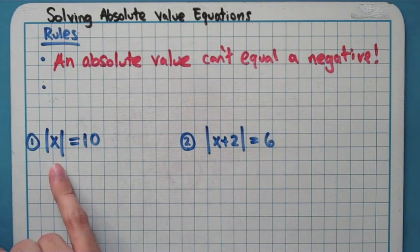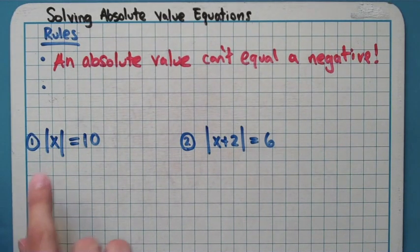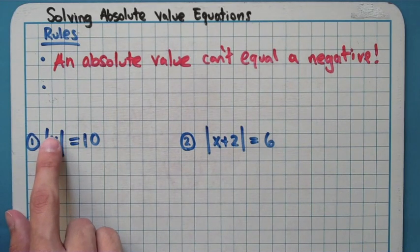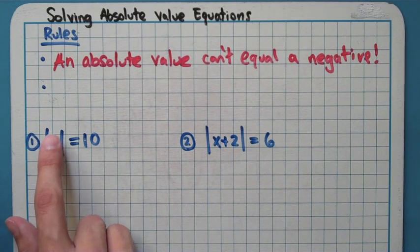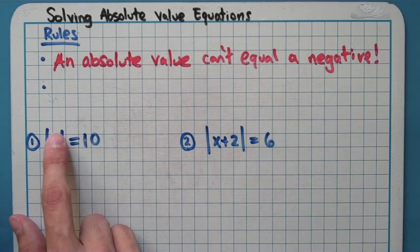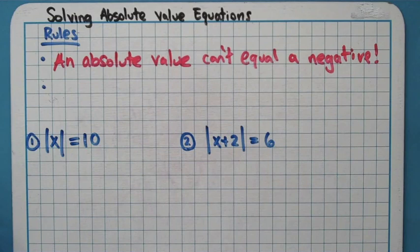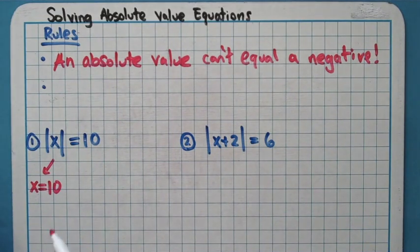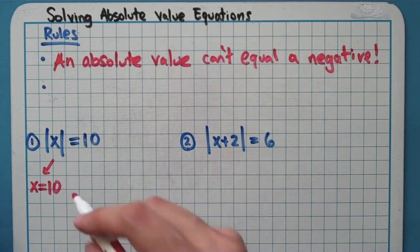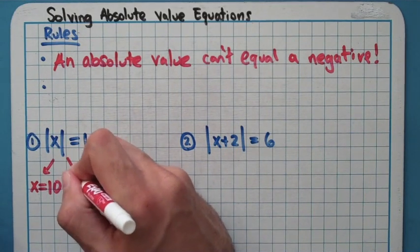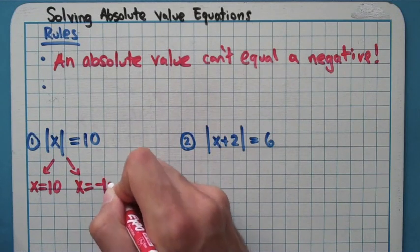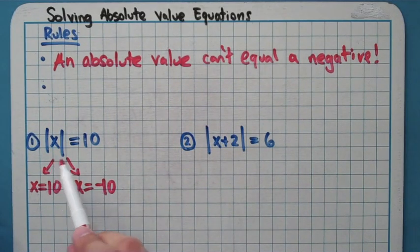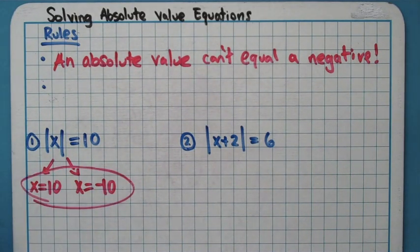We're taking the absolute value of x and getting 10. We want to know what number could have been inside that absolute value. The first answer most of you would say right away is 10 — x equals 10, and the absolute value of 10 is just 10. But there's actually a second answer: negative 10. Because if you take the absolute value of negative 10, you end up with positive 10. So there are two solutions: x equals 10 and x equals negative 10.